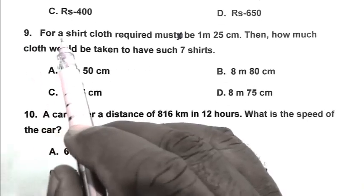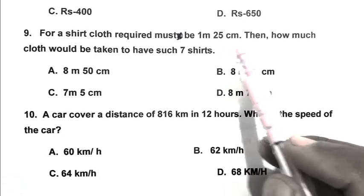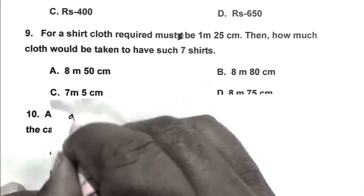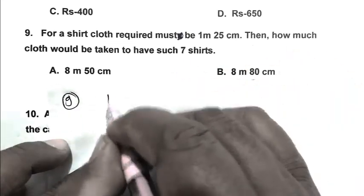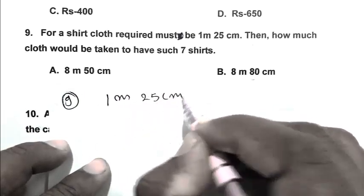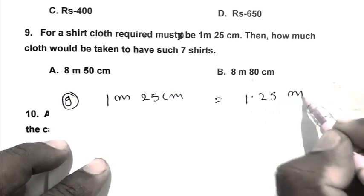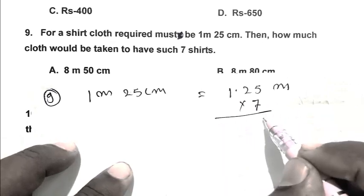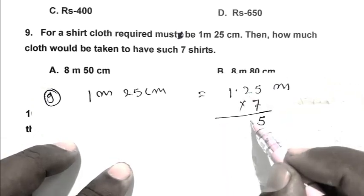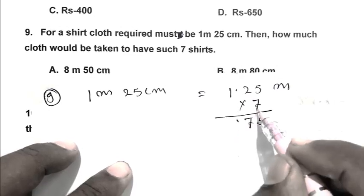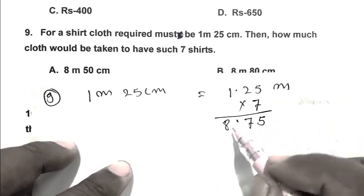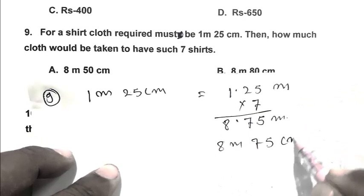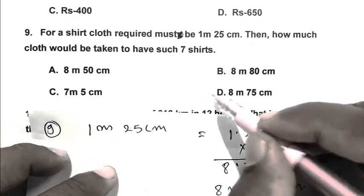Question number 9: For a shirt, cloth required must be 1 meter 25 cm. Then how much cloth would be needed for 7 such shirts? So friend, for one shirt, cloth required is 1.25 meters. For seven shirts, cloth required is 1.25 multiplied by 7, which becomes 8.75 meters, that is 8 meters 75 centimeters. So D is the right answer.